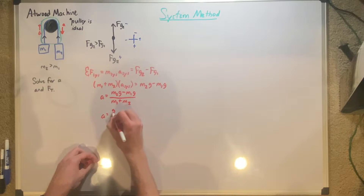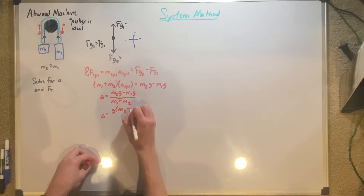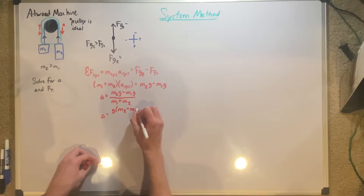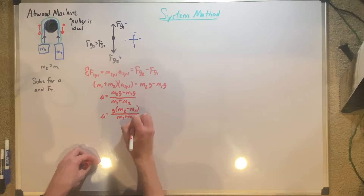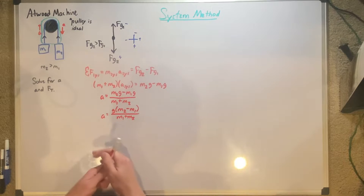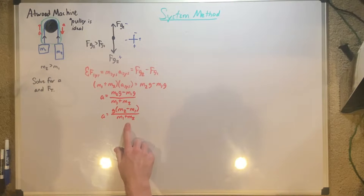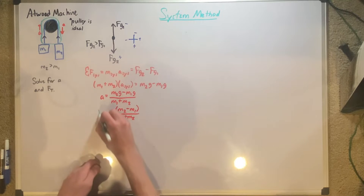This looks almost done, but there's one more thing we can do. A is equal to G times — and we reverse-distribute that G — M2 minus M1, all over M1 plus M2. This is our completed acceleration.